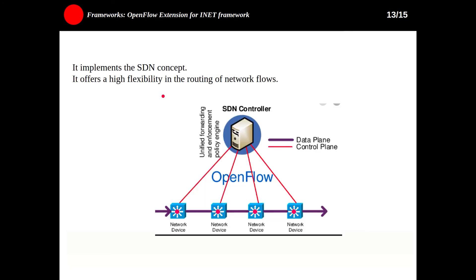The next one is the OpenFlow extension for the INET framework, suitable for software-defined networking (SDN), which is a new paradigm that separates the control plane from the data plane of forwarding elements. SDN constitutes a flexible architecture that allows quick and easy configuration of network devices. OpenFlow is currently the most prominent approach implementing SDN concepts and offers high flexibility in the routing of network flows. If you want to implement an SDN-based network, you can use this framework.